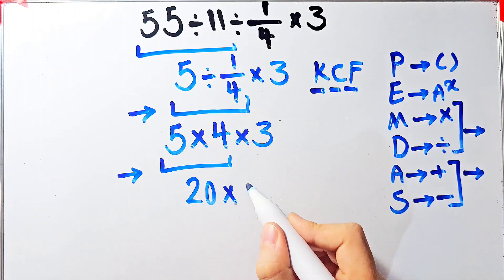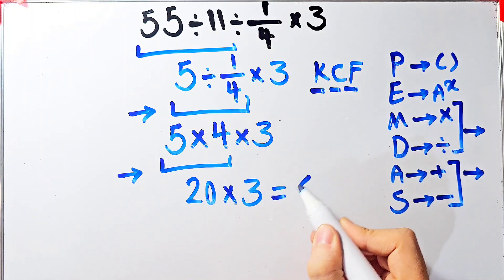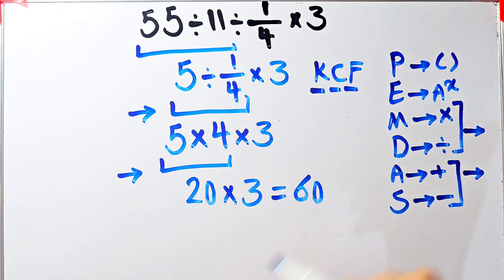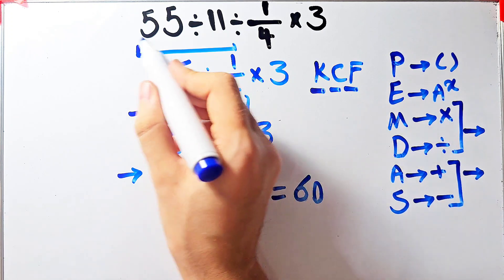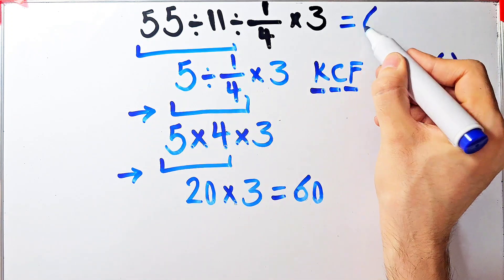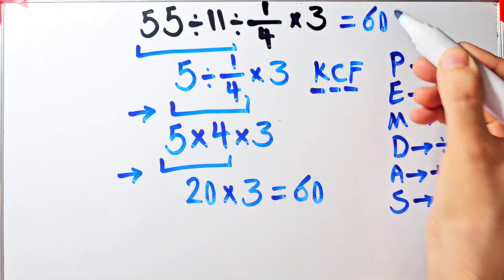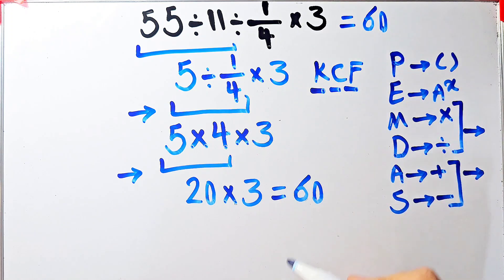20 times 3 equals 60. The final answer of this question equals 60. If you want to get the right answer of this question, you must follow the PEMDAS rule. If you don't pay attention to this rule, you'll get the wrong answer. To see more math videos, subscribe to the channel.